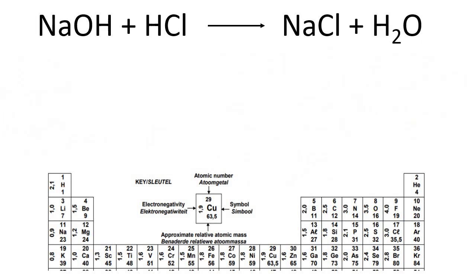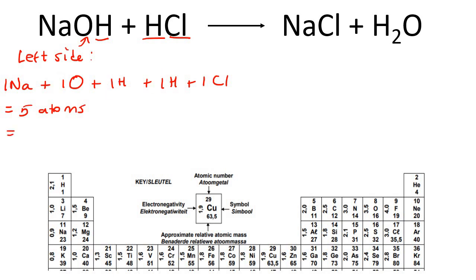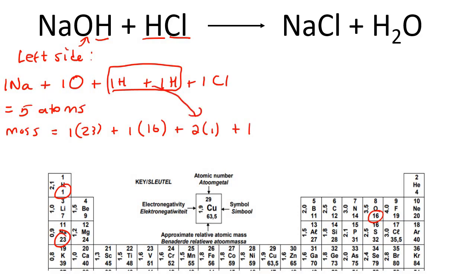Let's do some more examples. So let's start with the left side. Here we've got one Na — so one sodium — plus one oxygen, plus one hydrogen, plus one hydrogen, plus one hydrogen over here, plus one chlorine over there. So if you had to count the number of atoms, that would be one plus one plus one plus one plus one plus one, so that's going to be five atoms. If we go calculate the mass, that's just going to be one sodium — so one times 23 — plus one times oxygen which is 16, plus two hydrogens each with a mass of one, and then one chlorine — now chlorine is 35.5. So if we had to calculate the mass, that gives us 55.5.